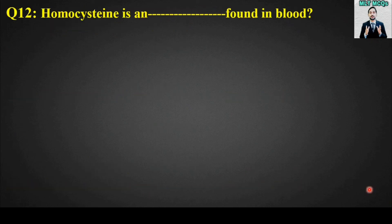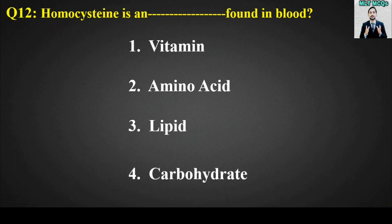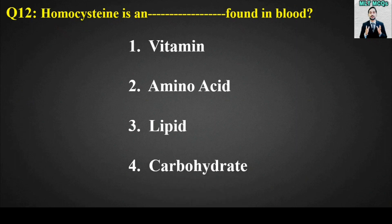MCQ number twelve: Homocysteine is a blank found in blood. Options are: vitamin; amino acid; lipid; carbohydrate. The right answer is option number two — homocysteine is an amino acid found in blood.